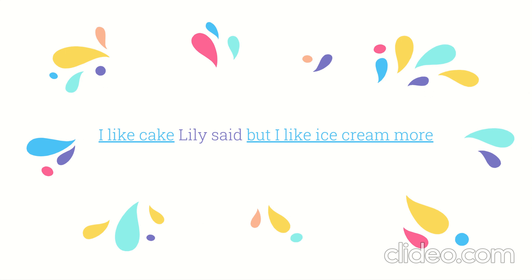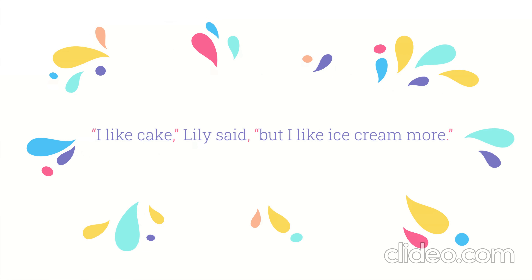Notice how the dialogue is split into two. We treat each part on its own. For 'but I like ice cream more,' we start a new set of quotation marks at 'but' and end after 'more.' Since this part of the dialogue is at the end of the sentence, we put a period after 'more,' before the closing quotation mark. So the full punctuation looks like: quotation mark, comma, quotation mark — comma after 'said' — then quotation mark, period, quotation mark.